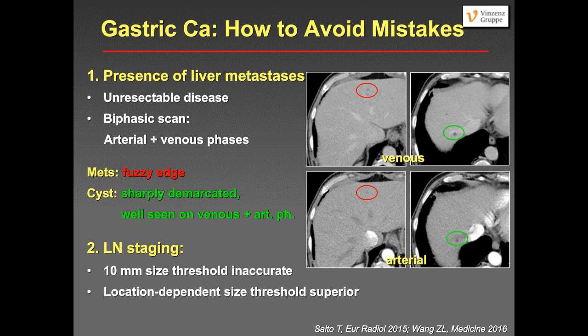Another mistake to avoid is doing only a single-phase scan, because liver metastases are a very important issue in patients with gastric cancer — patients with liver metastases have unresectable disease. If you only do a venous phase scan, you may have trouble differentiating lesions from metastases. Here, a very small lesion is sharply demarcated in the venous phase but with fuzzy edges — this turned out to be a metastasis. However, on the arterial phase scan you can still see a very sharply demarcated small cyst, whereas the metastasis is not well seen in the arterial phase. The biphasic scan really helps in differentiating. For lymph node staging, the 10 mm size threshold is quite inaccurate, and location-dependent size thresholds are superior but more complicated.